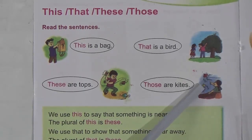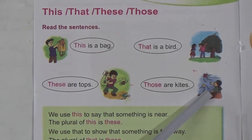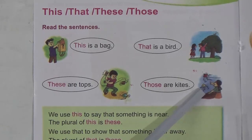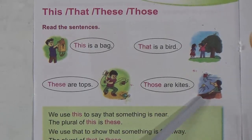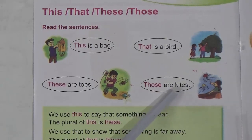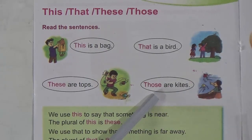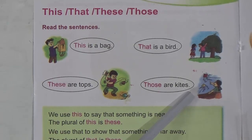In the next picture there are two kites which are far away from the girl, so we use 'those'. 'Those' is the plural of 'that'. The kites are far away from the girl, so 'those are kites'. We use 'those' when we are talking about more than one person, thing, animal, or bird which are not near us — that means which are far away from us.